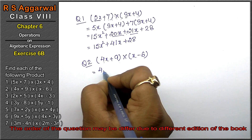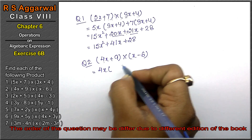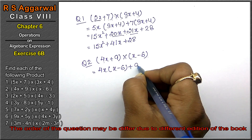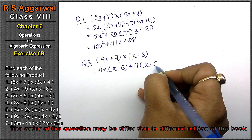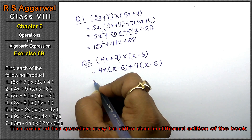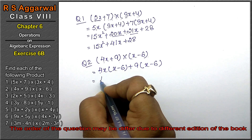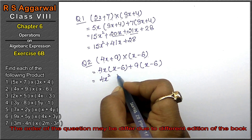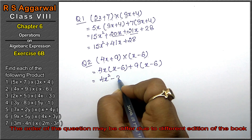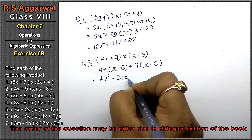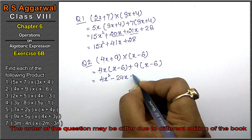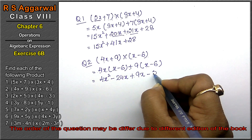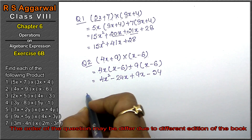First we will take 4x and multiply it in the entire bracket, then we will take plus 9 and multiply it in the entire bracket. So: 4 times 1, x times x is x squared, minus 4 times 6 is 24x, plus 9x, minus 9 times 6 is 54.